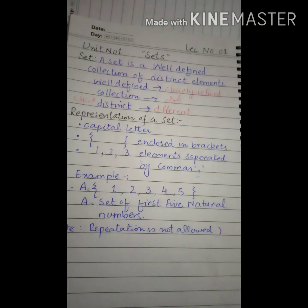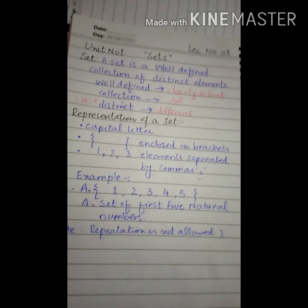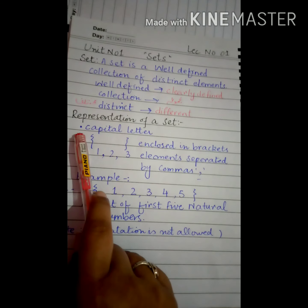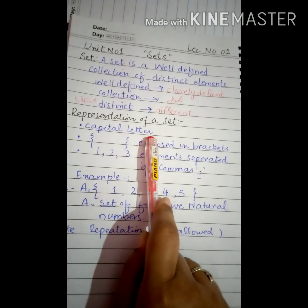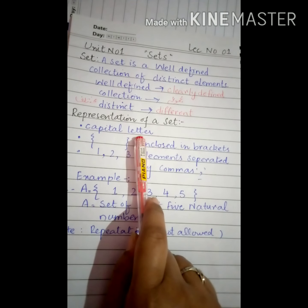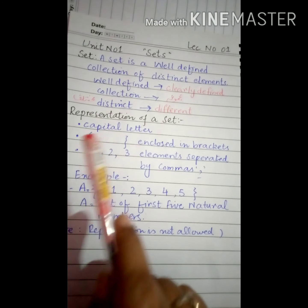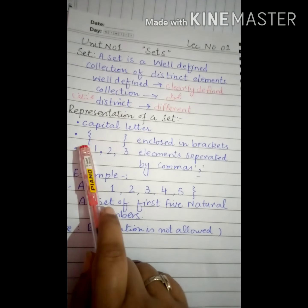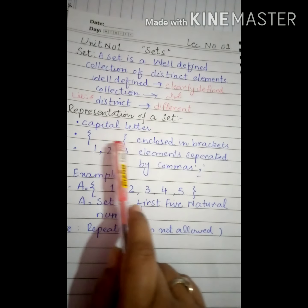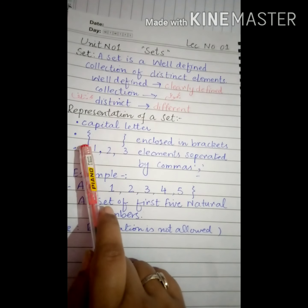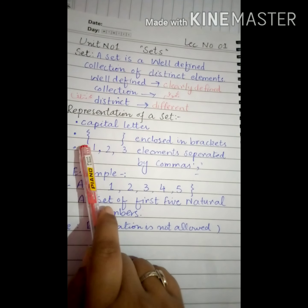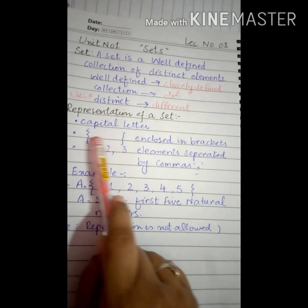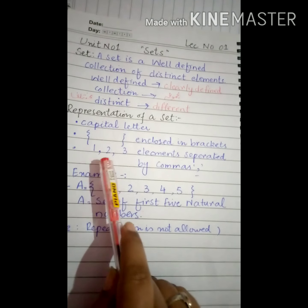How to represent a set? Set کو کس طرح سے لکھا جاتا ہے? There are two or three things you need to note. You have to always represent a set with a capital letter. Whenever you write a set, it should be denoted with a capital letter. After that, braces or brackets - you have to put an opening bracket and then a closing brace. All elements of the set will be written inside these.